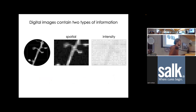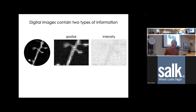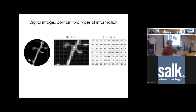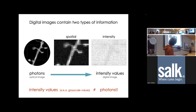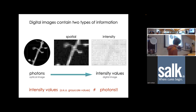Digital images fundamentally contain two types of information: spatial information, which refers to where in your sample this bit of information came from, and intensity information. We've got some pixels that have some finite size - some chunk of space in your sample is represented by a single measurement. The process of digital imaging is converting photons in your continuous optical image to intensity values in the digital image. Sometimes we call them gray values, intensity values, arbitrary values - I tend to use the term intensity values.